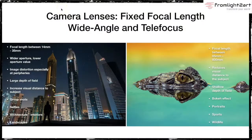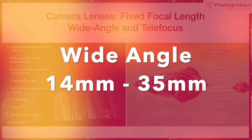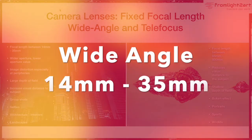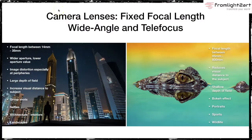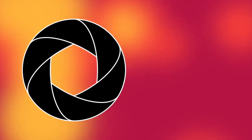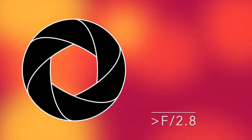Two more camera lenses we're going to cover are the fixed focal length wide-angle and telephoto lens. The focal length for wide-angle lenses ranges between 14mm and 35mm. They have generally a wider aperture, meaning a lower aperture value, such as 2.8 or even lower.